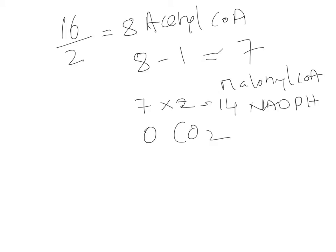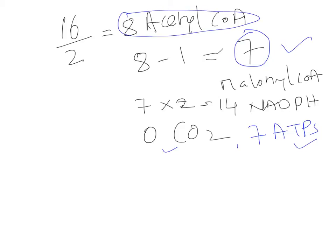For ATP: each malonyl-CoA requires one acetyl-CoA carboxylase reaction consuming 1 ATP, so 7 malonyl-CoAs = 7 ATPs consumed. Summary for 16-carbon palmitate: 8 total acetyl-CoAs (7 as malonyl-CoA + 1 directly), 7 ATPs, 14 NADPH+H⁺, and 0 net CO₂.